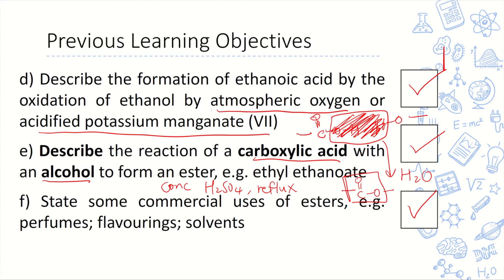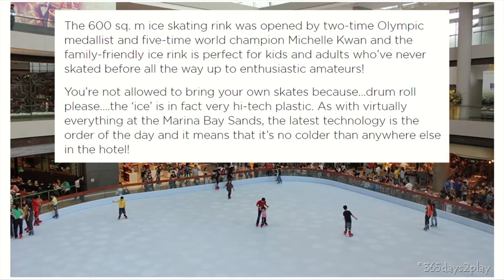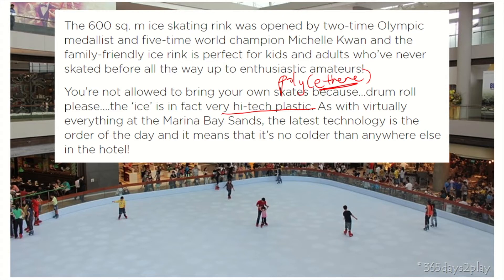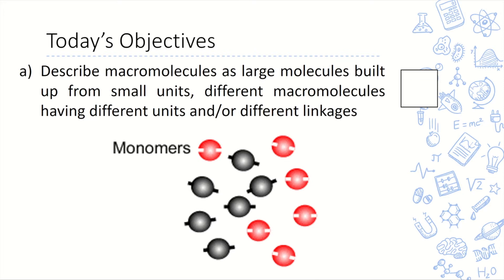Moving on to today's lesson, the last chapter of organic chemistry. Looking at this picture of an ice skating rink at Marina Bay Sands — opened by two-time Olympic medalist Michelle Kwan — the ice is actually a high-tech plastic called polyethene. We learned about this in alkene, where alkenes undergo addition polymerization: many ethene monomers join together to form a long chain, which we call a macromolecule. Today's learning objective is seeing how small units called monomers come together to form a large molecule called a macromolecule.